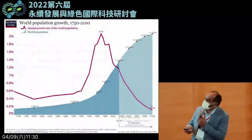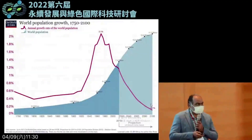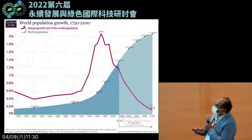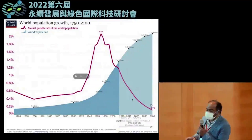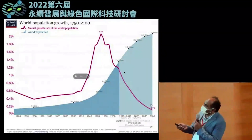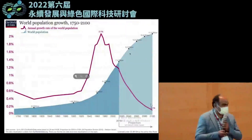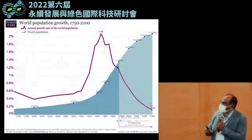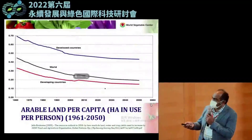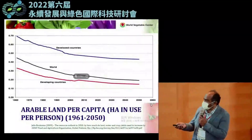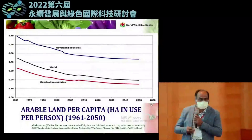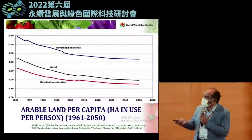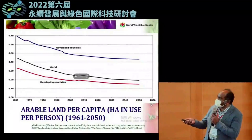Many countries are taking efforts to reduce population growth, however in the next 30 years, by 2050, the world population is going to exceed 9 billion. On one side we have significant population increase; on the other side, the available land for agriculture has significantly declined over the last 90 years, in both developed and developing countries.